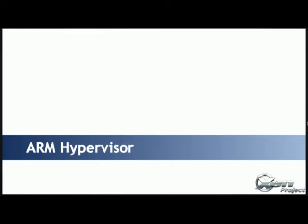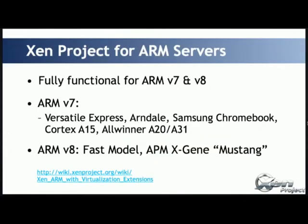One of the new projects started two years ago is Xen on ARM. We support ARMv7 and ARMv8 products and can run on multiple platforms: the ARM reference platform, Chromebook, Cortex-A15 in general, Arndale, and OMAP TI. Adding a new platform requires only a few lines of code to say I want to start this device. We also have ARMv8 support for the ARM fast model, and support for APM, which has the first server with ARM 64-bit processors. Everything is documented on the Xen wiki.